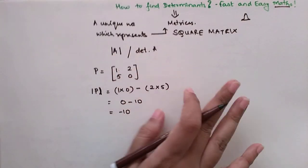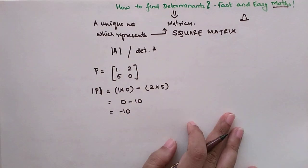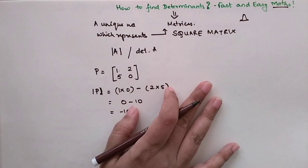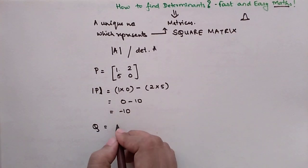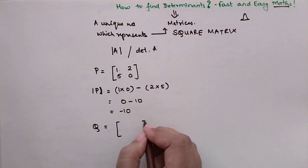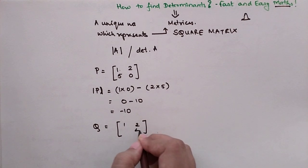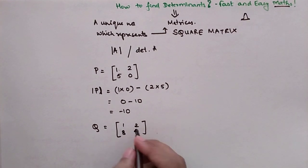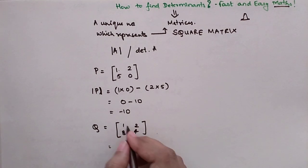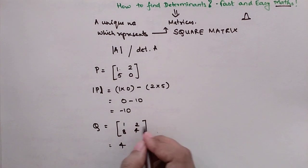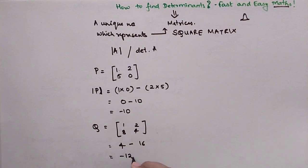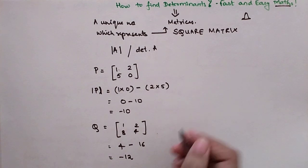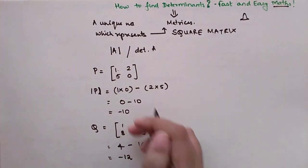Please understand your determinant can have any value — it can be real numbers, complex numbers, anything. Now let's take another example: the determinant of [1, 2; 4, 8]. Here we get 1×4 = 4 and 2×8 = 16, and 4 − 16 = −12.